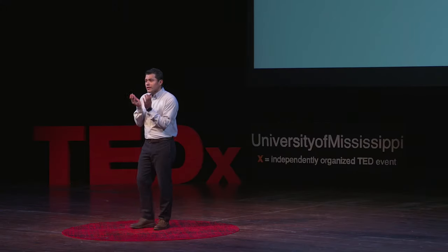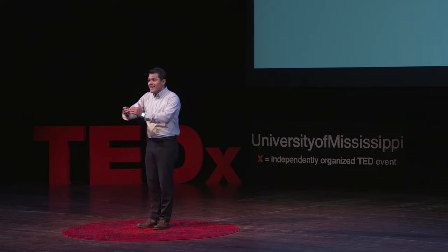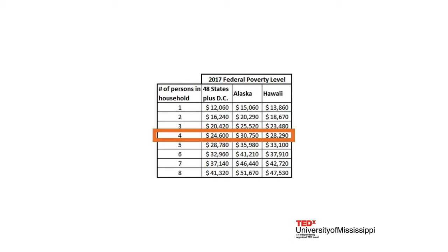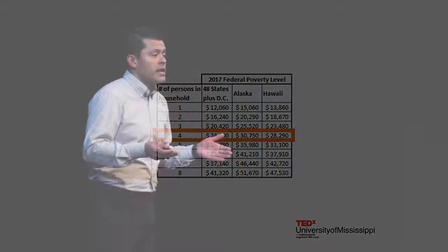If the household total income is less than the threshold, that family and all its members are considered in poverty. Since the Census Bureau needed a benchmark, this was adopted as the official poverty measure. Each year in September, these thresholds are just updated by adjusting them for inflation.